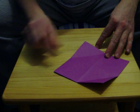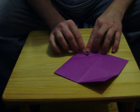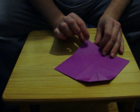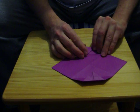What you need to do now is fold that corner just to the point of the crease there, and do the same on the other side. Fold the corner just to the point of the crease that we just made.